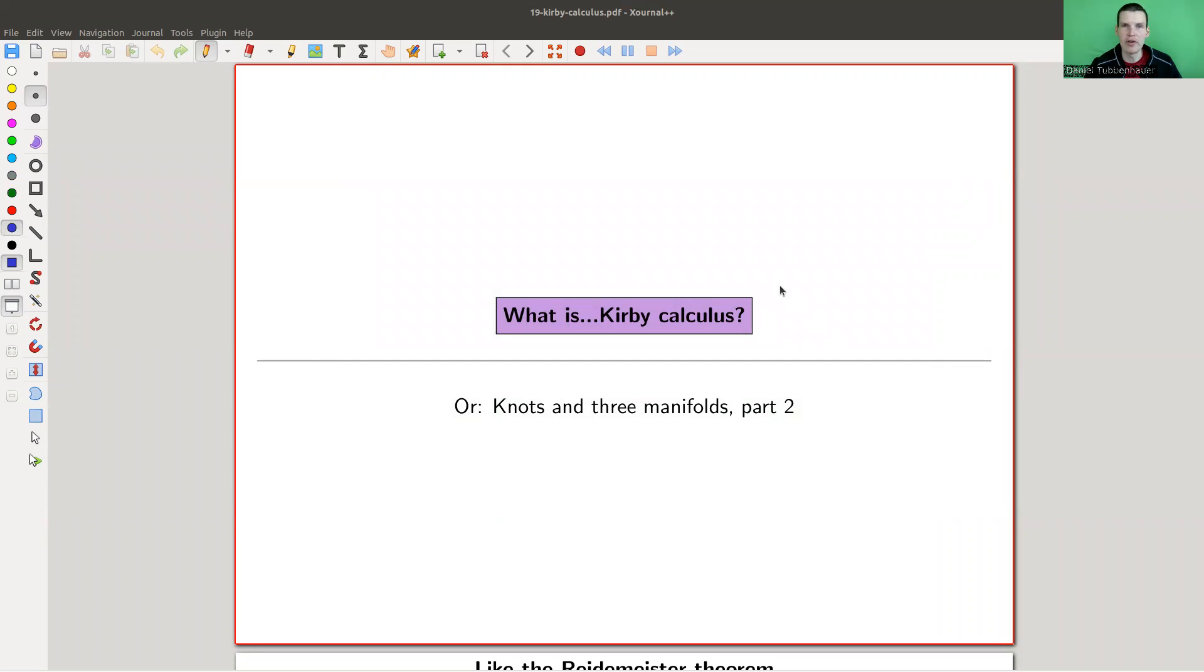Okay, welcome everyone to my continuation of what is geometric topology. Today I would like to tell you about the Reidemeister moves, or kind of the Reidemeister moves for three manifolds, and the formal name of it is called Kirby calculus. So very surprisingly, in some sense, three manifolds are not much more complicated than knots.